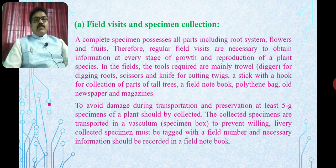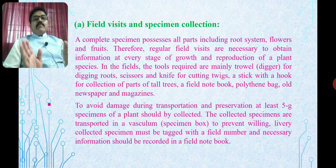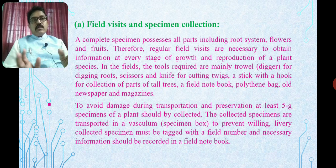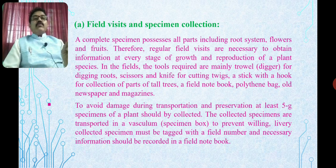First, the field visit and specimen collection are very important — without this we cannot prepare the herbarium. You go for the particular field visit and collect specimens. The complete specimen possesses all parts including the root system, flowers, and fruits. But for shrubs or trees, only the flowers, fruits, and twigs of the particular plant will be collected. Regular field visits are necessary to obtain information at every stage of growth and reproduction of the plant species.